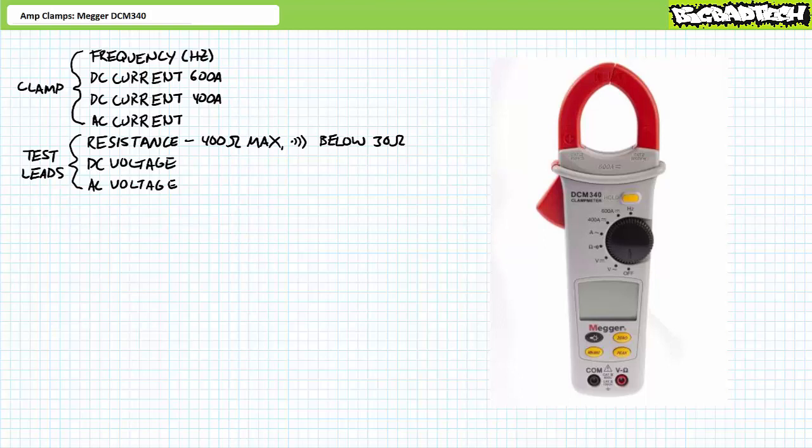The three bottom functions, AC voltage, DC voltage, resistance and continuity, make use of external test leads similar to an ordinary DMM. For background information on voltmeters and ohmmeters, be sure to check out the supporting material at the Big Bad Tech channel.